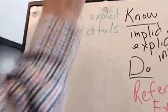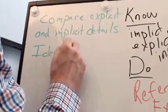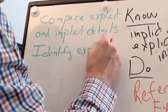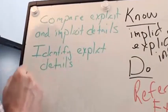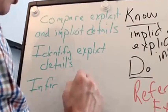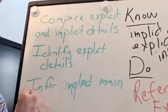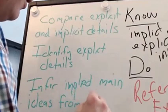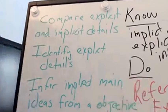Before they could even do that, you might want to have them identify explicit details. Maybe they would need to infer implied main ideas of a paragraph. All of these would help students reach that learning objective. All of those are part of that grade level expectation.